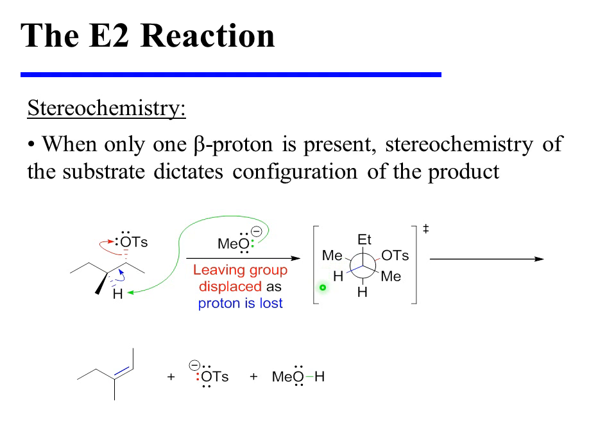However, there is only a single transition state that places the beta proton anti-periplanar to the tosylate leaving group. And in that transition state, the ethyl group is cis to the methyl group on the neighboring carbon. This yields the configuration of the alkene product shown here.